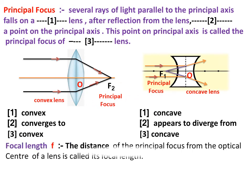The next definition is focal length, represented by the letter F. The distance of the principal focus from the optical center of a lens is called its focal length. O is the optical center. A ray of light through the optical center of a lens passes without suffering any deviation.